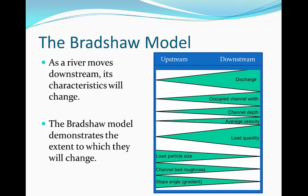And this is what it looks like. We have a number of river characteristics and they will either increase or decrease if we head downstream. Discharge, channel width, depth, velocity, and the amount of load in the river are all going to increase as we head downstream.